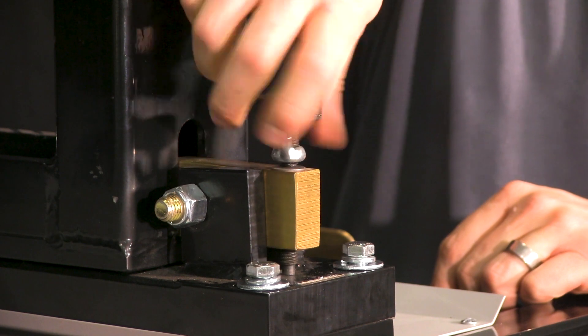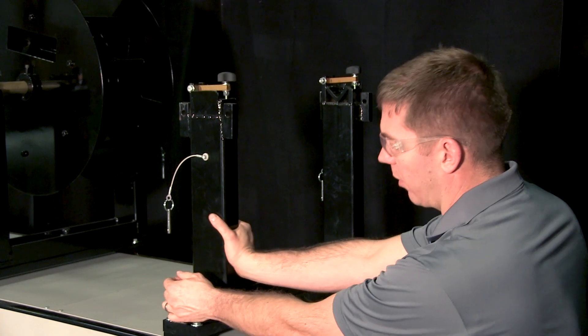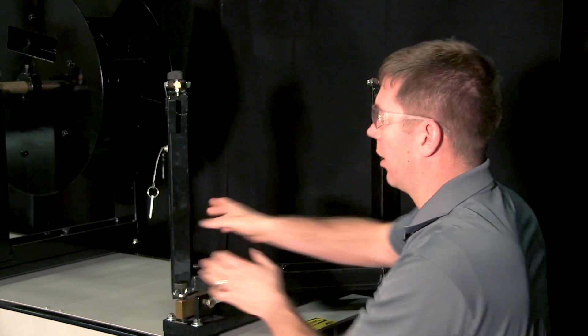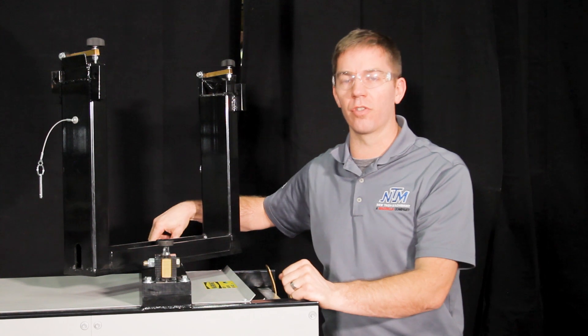Next you want to loosen the thumb screw, slide the locking pin out, you want to rotate the reel a little bit so you can access the fasteners on the back side to finish mounting the turnstile.